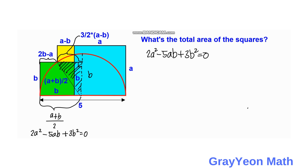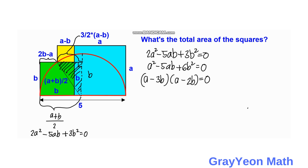To solve the quadratic, we multiply the coefficient of the first term by that of the third term, giving a² minus 5ab + 6b². Factoring with factors of 6 that sum to negative 5: we get (a minus 3b) and (a minus 2b) equal to zero. Since we multiplied the third term by 2, we divide back: (2a minus 3b)(a minus b) = 0.